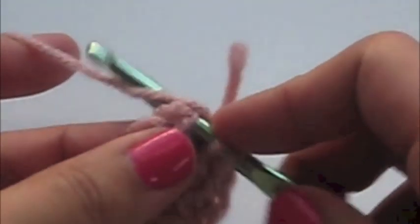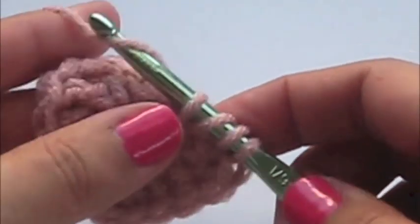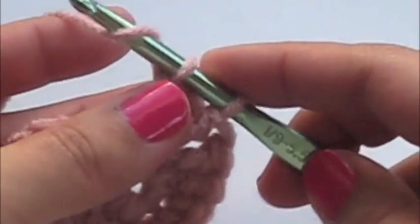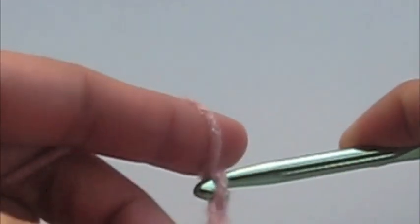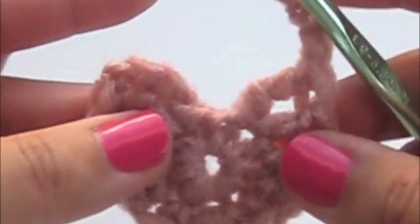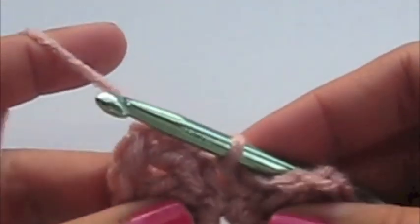And in the next stitch, you're going to do a half double crochet. And then in your last stitch, you're going to do a double crochet, a treble crochet, also known as a triple crochet, and then you're going to chain four. And now you're going to slip stitch right there in the center. You can slip stitch right where your chain four starts, too. It doesn't matter.